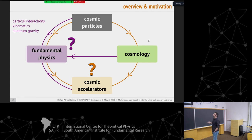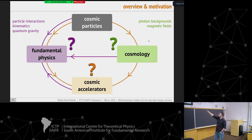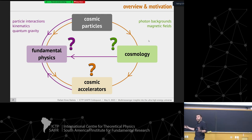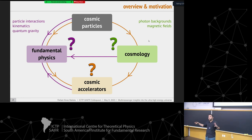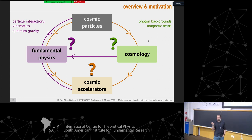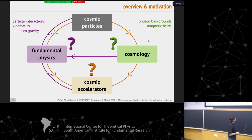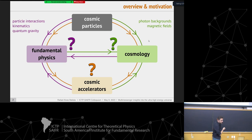If we wanted to study cosmology — like understand photon backgrounds such as the cosmic microwave background or the extragalactic background light, which comprises all types of electromagnetic radiation across the whole spectrum, or if we want to study magnetic fields in the universe — we would need information coming from these cosmic particles. If we know the sources and the fundamental physics, we can go in this direction.